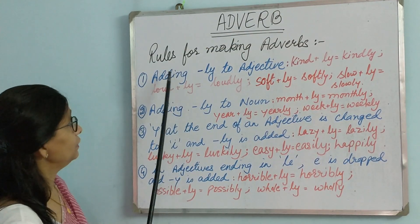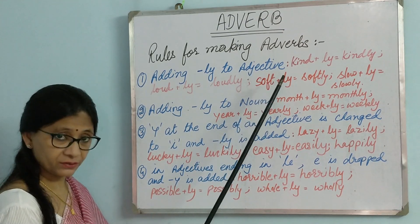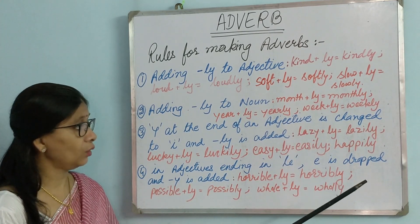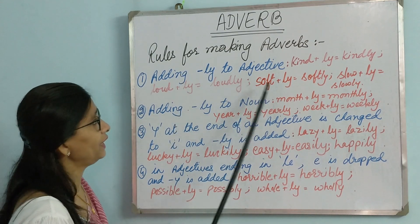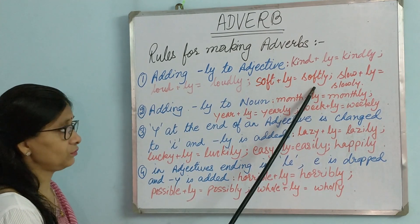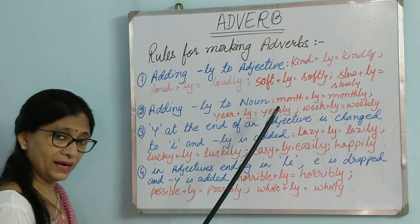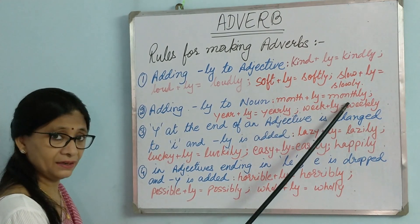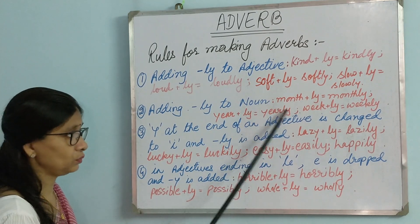Now let us quickly see the rules for making adverbs. The most common method is adding -ly to an adjective as a suffix. For example: kind becomes kindly, loud becomes loudly, soft becomes softly, slow becomes slowly. We can also add -ly to nouns — for example, month becomes monthly, which is an adjective. Similarly, yearly and weekly are formed by adding -ly to nouns.